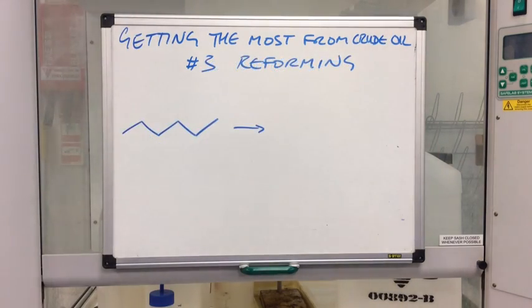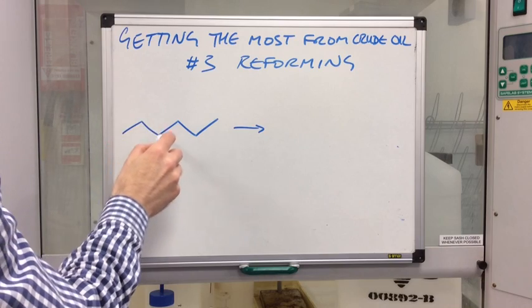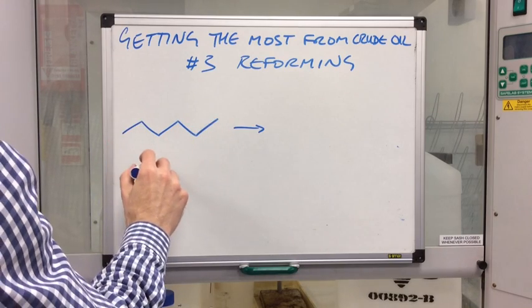The final process we're going to look at is called reforming. So we've just seen that branched isomers have higher RON values. So we've got one, two, three, four, five, six. So this is hexane, straight chain hexane.